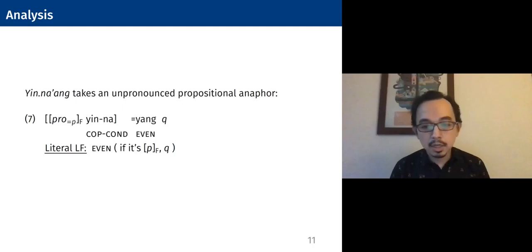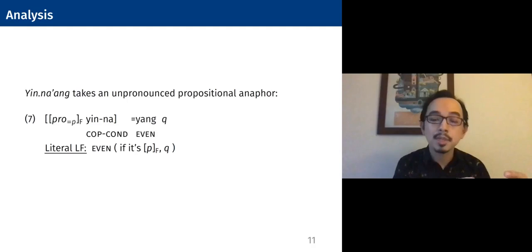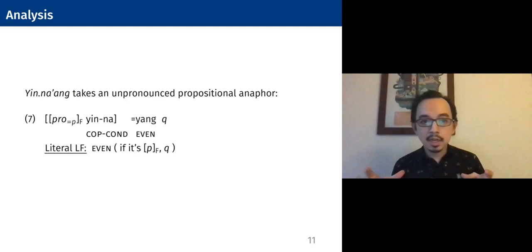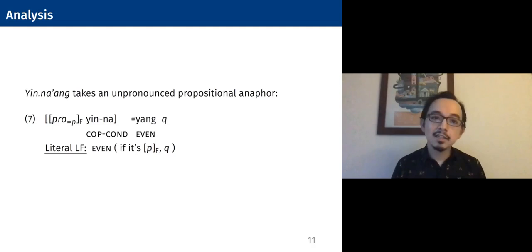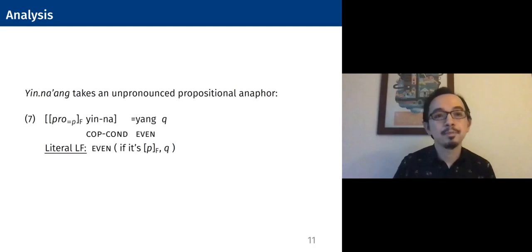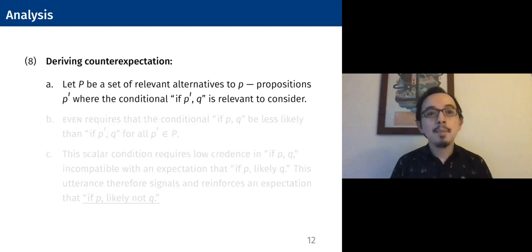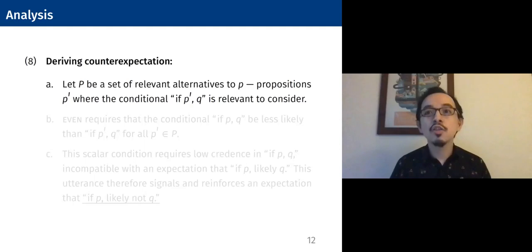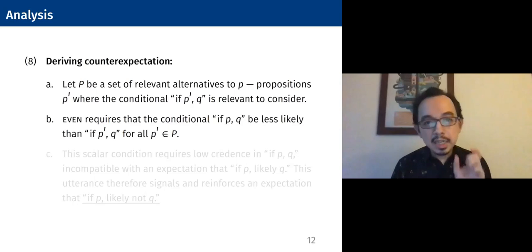Here's a quick sketch of the analysis. The proposal will be that yinang takes an unpronounced propositional anaphor which refers to this specific previous proposition. Unpacking the morphology compositionally, a sentence of the form 'yinang Q' is literally going to be something of the form 'even if it's P (unpronounced), Q.' Suppose that capital P is a set of relevant alternatives to proposition P — propositions P-prime where the conditional 'if P-prime, Q' are relevant to consider. Even will require that the conditional 'if P, Q' is less likely than its alternatives 'if P-prime, Q' for all other propositions in capital P.